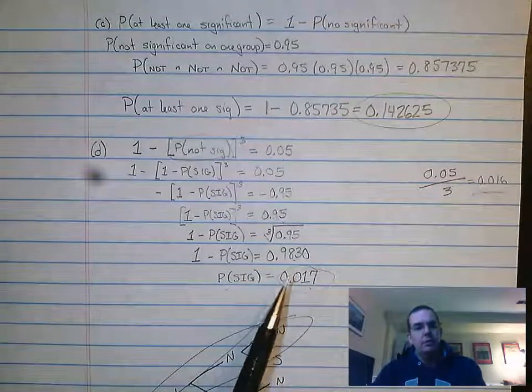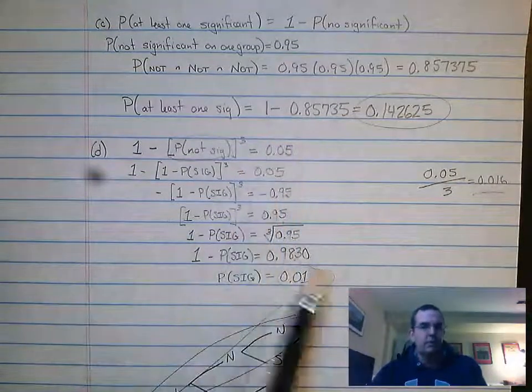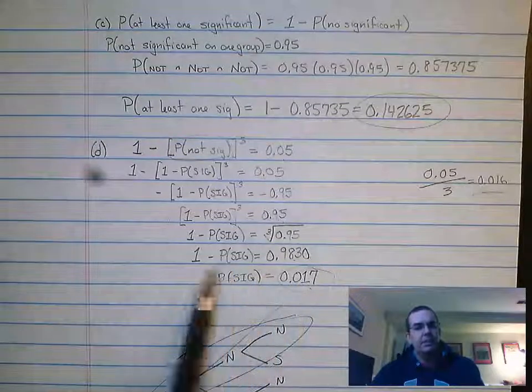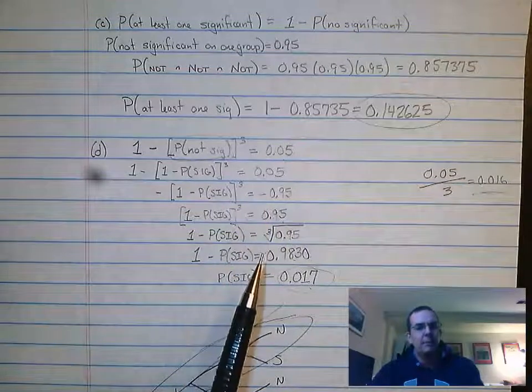And if you wanted to, you could run the test, you could go ahead and rerun this thing backwards, draw the tree diagram to confirm that 0.017 actually gives you a probability of at least one of about 5%.